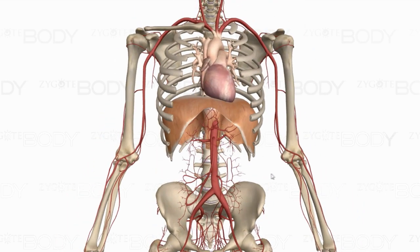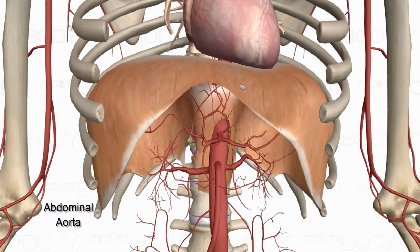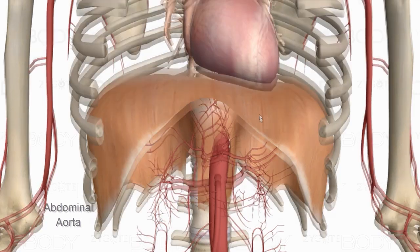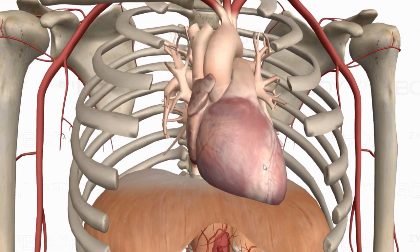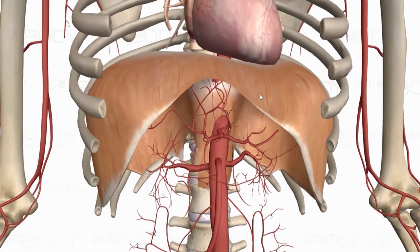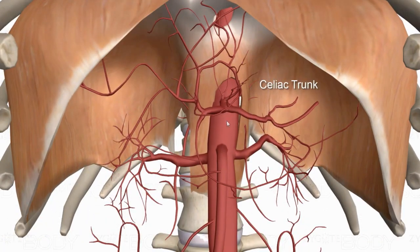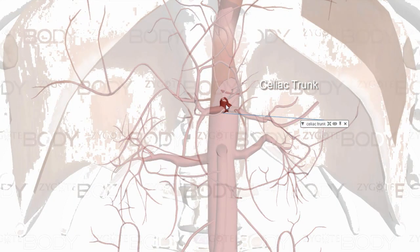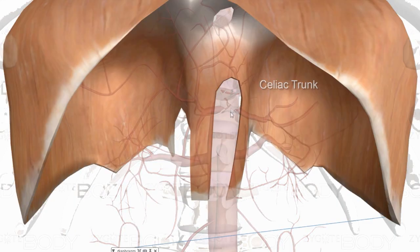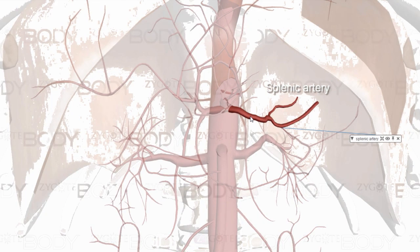Now let's look at the abdominal aorta as it pops through the diaphragm. Starting with the ascending aorta, the aortic arch, the descending aorta — once it passes through the diaphragm it becomes the abdominal aorta. The first major branch is the celiac trunk, and the first big branch coming off that goes to the spleen — this is the splenic artery.